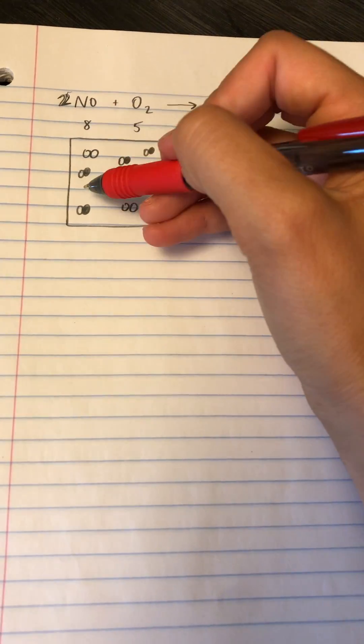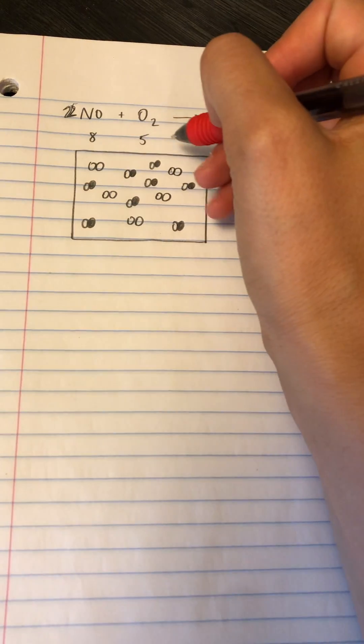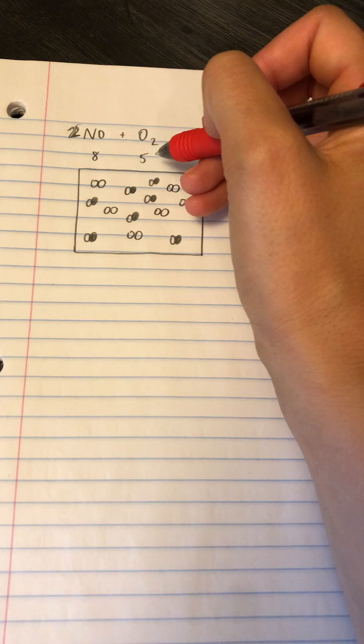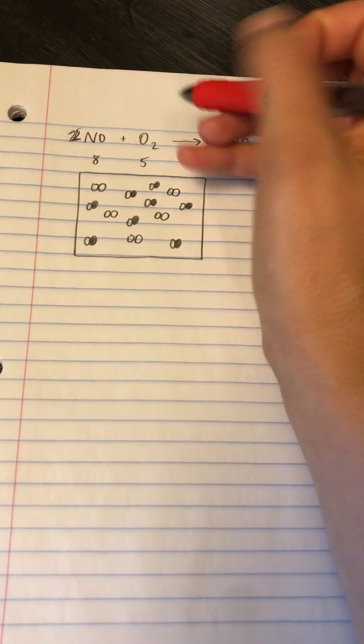So what I'm going to do is I'm going to look at this particle diagram. So for every two NOs, there were eight of them to start and there were five O2s. If this were a one-to-one ratio, then the one that you have the least amount of is your limiting reactant.